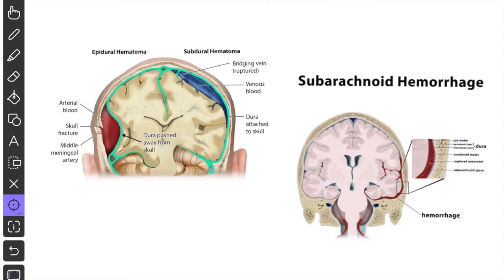In head injury, subdural hemorrhage is due to the slow collection of venous blood caused by the tearing of the veins. Subarachnoid hemorrhage is arterial, due to the rupture of an aneurysm. Extradural hemorrhage results from the torn meningeal vessels associated with the fracture of the skull bones.